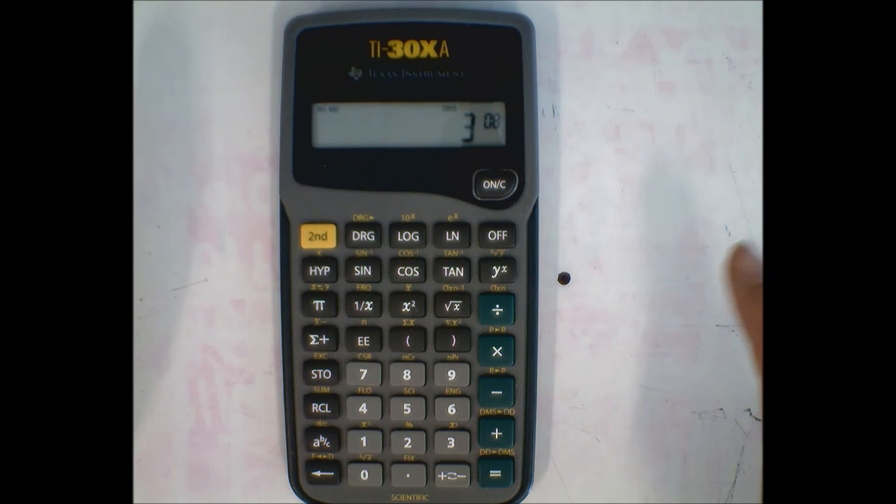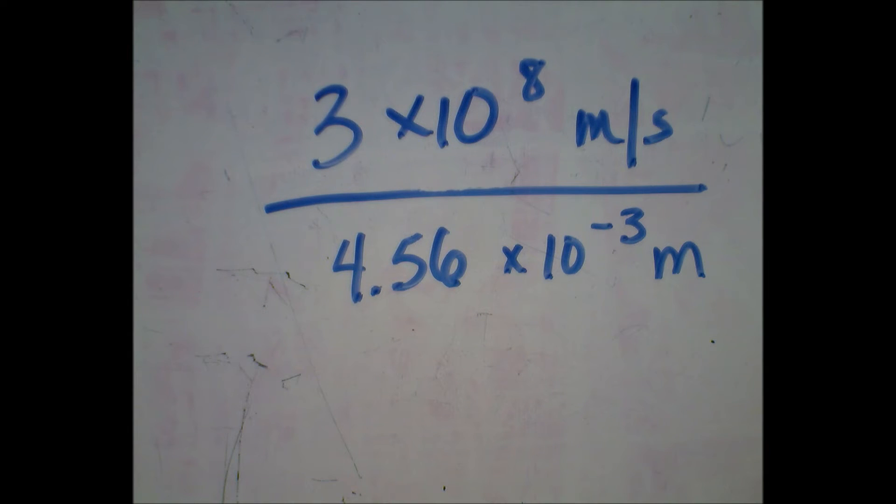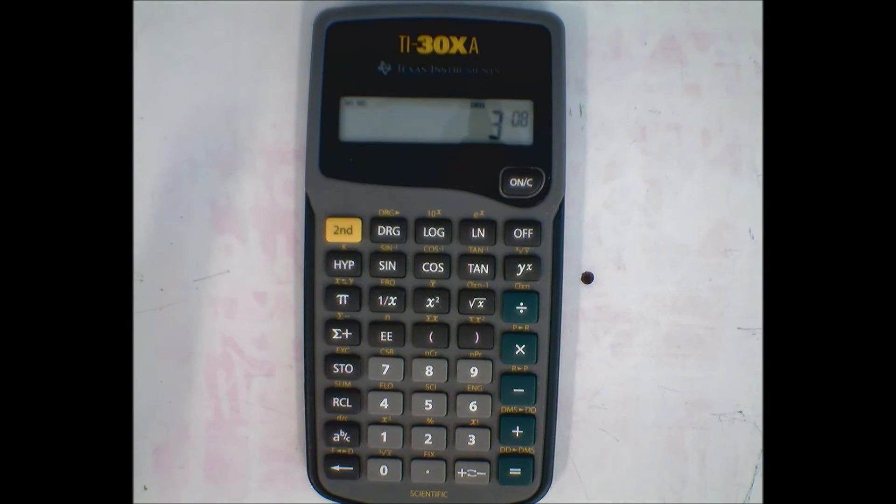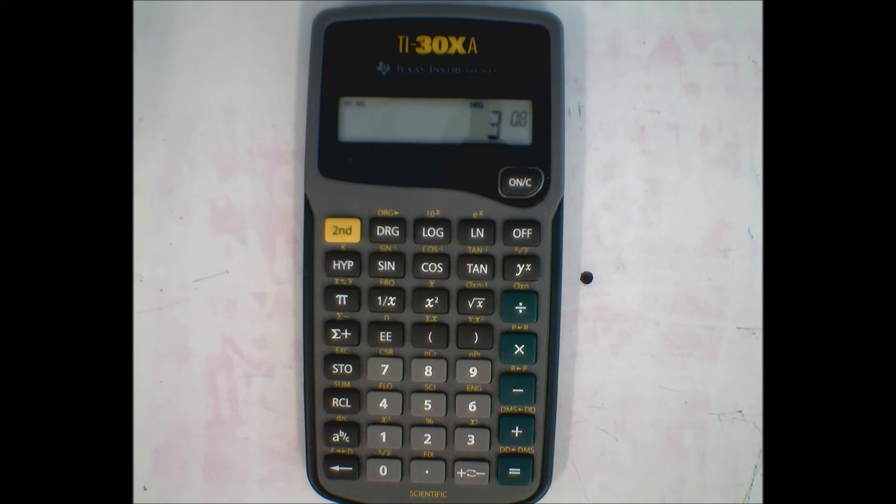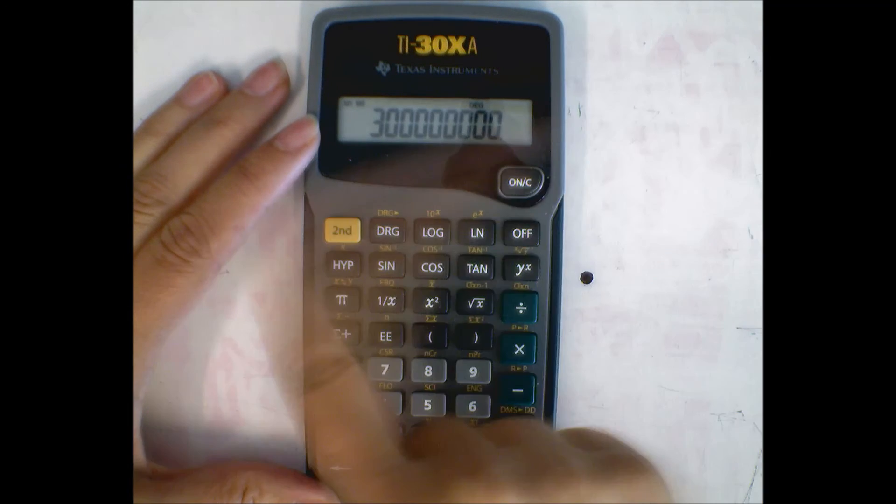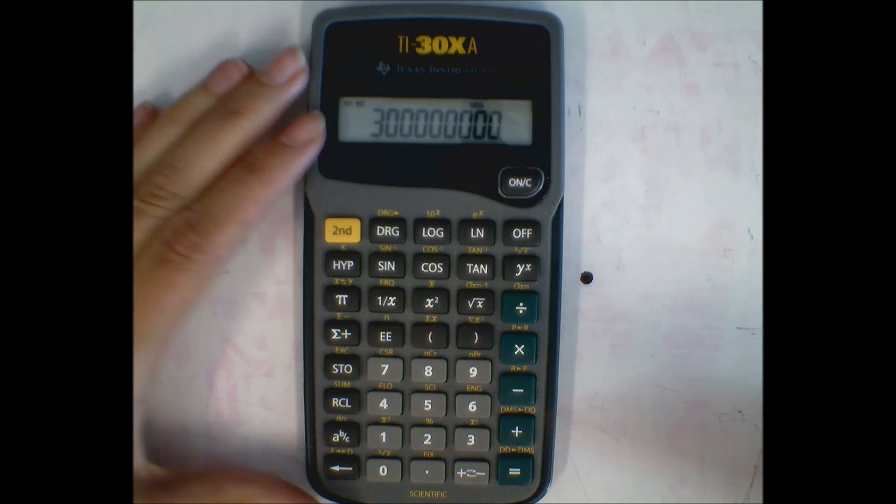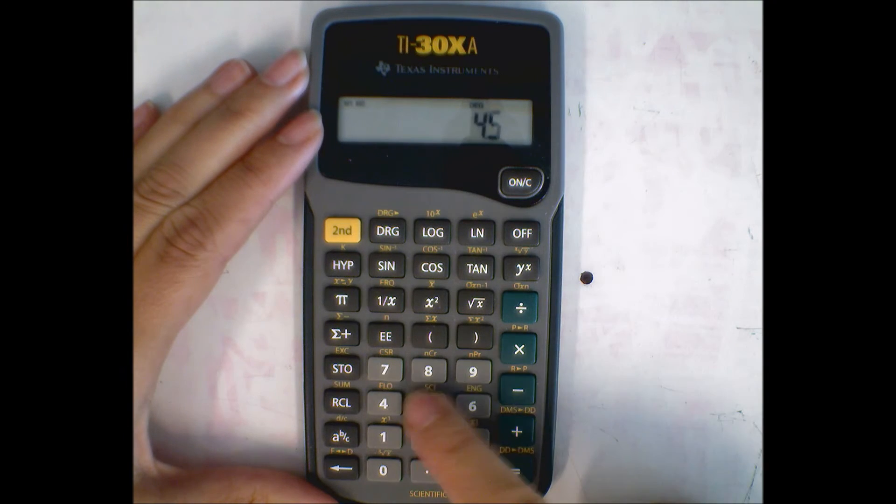To finish out the problem, I need to divide it by 4.56 times 10 to the negative 3. I can hit an actual function key, so I'm going to divide. Don't be alarmed because there was enough space in the screen, so it put that number in standard format instead of scientific notation. That's quite all right. 4.56.